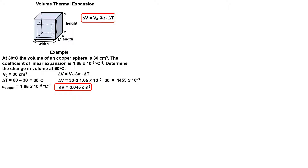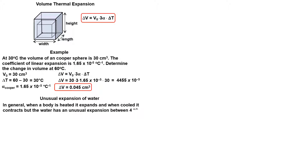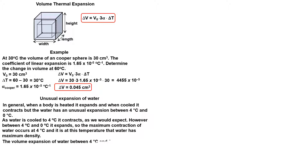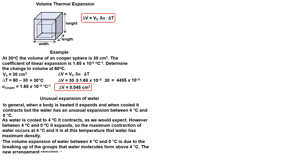You should know the unusual expansion of water. In general, when a body is heated it expands and when cooled it contracts. But water has an unusual expansion between 4 and 0 degrees Celsius. As water is cooled to 4 degrees Celsius, it contracts as expected. However, between 4 and 0 degrees Celsius, it expands. The maximum contraction of water occurs at 4 degrees Celsius, where water has its maximum density. This volume expansion is due to the breaking up of molecular groups that water forms above 4 degrees Celsius.